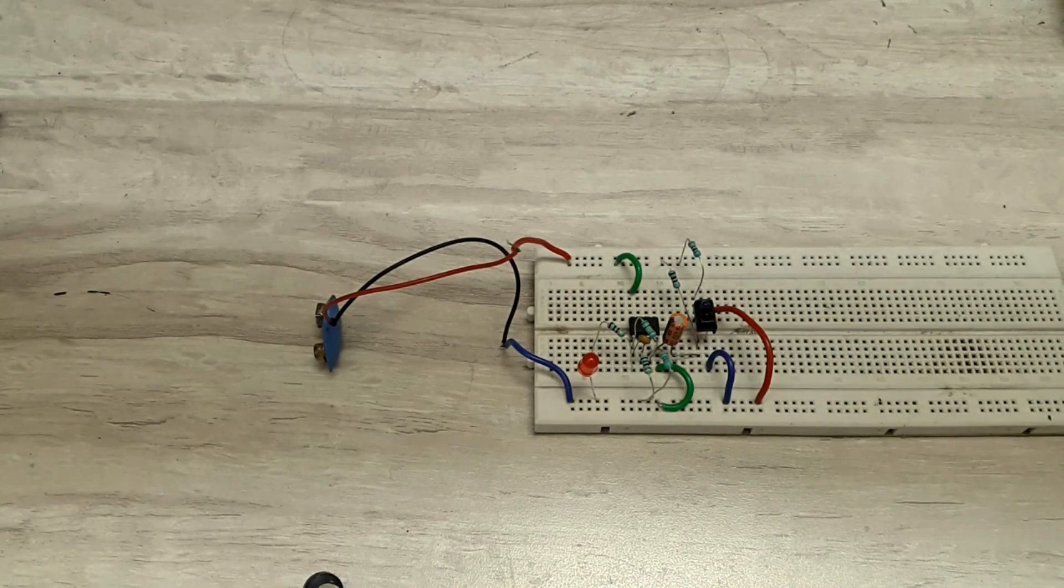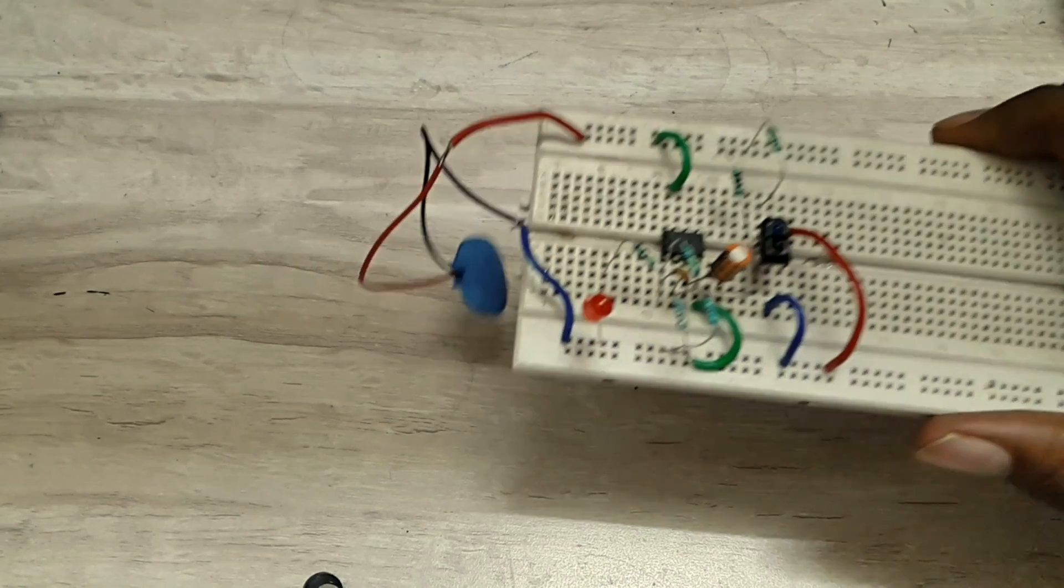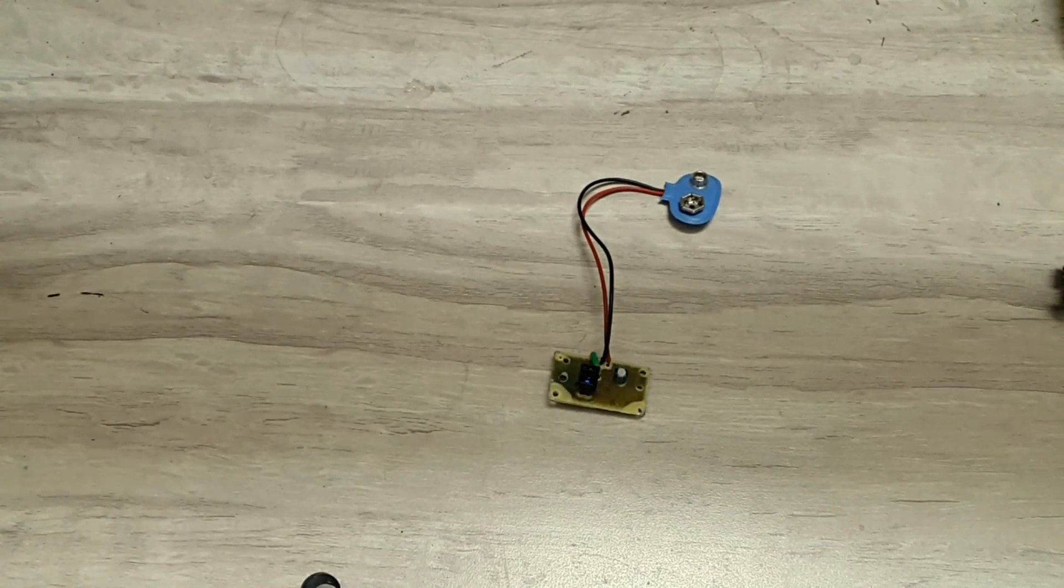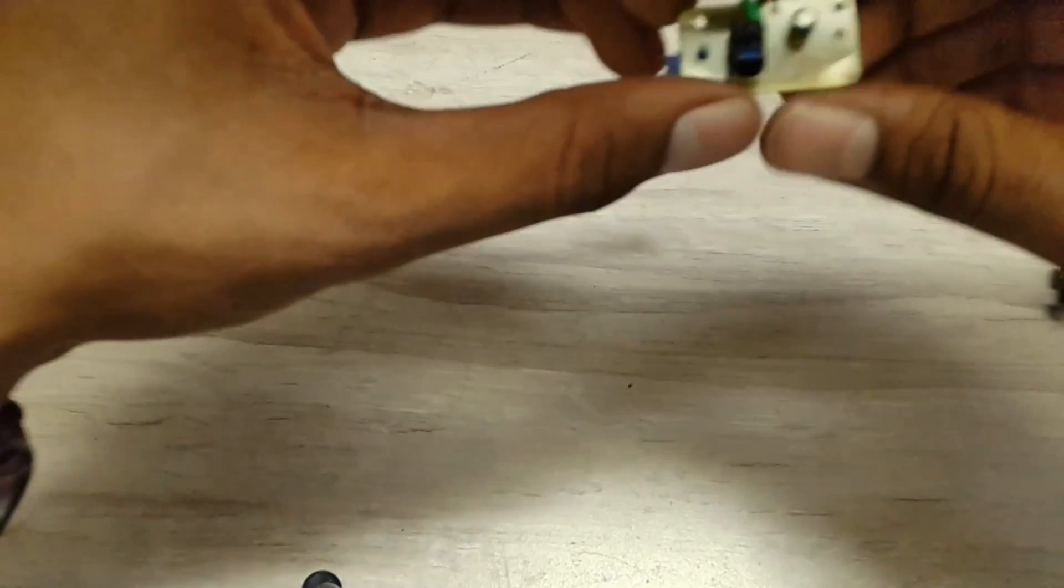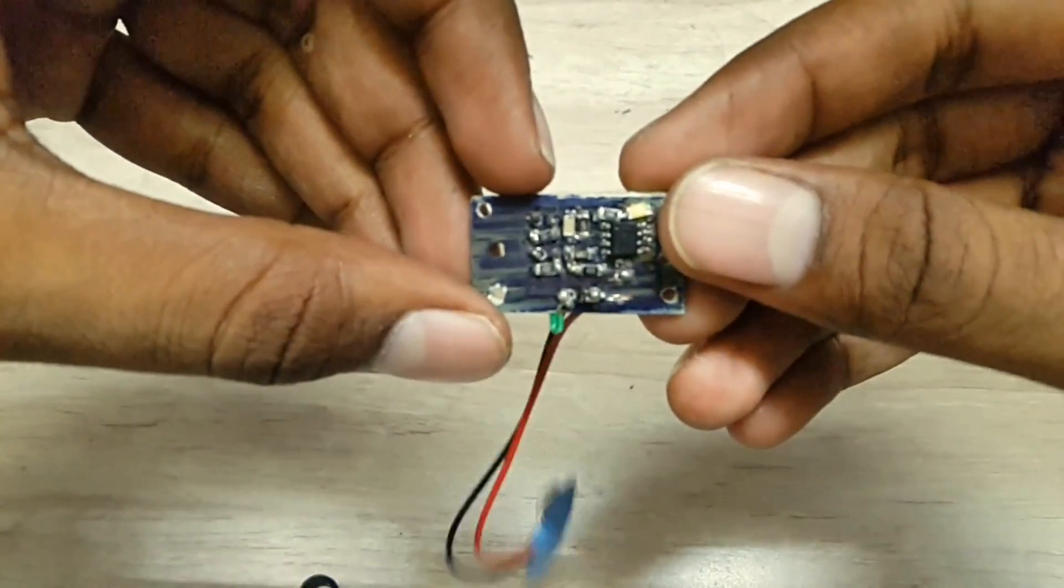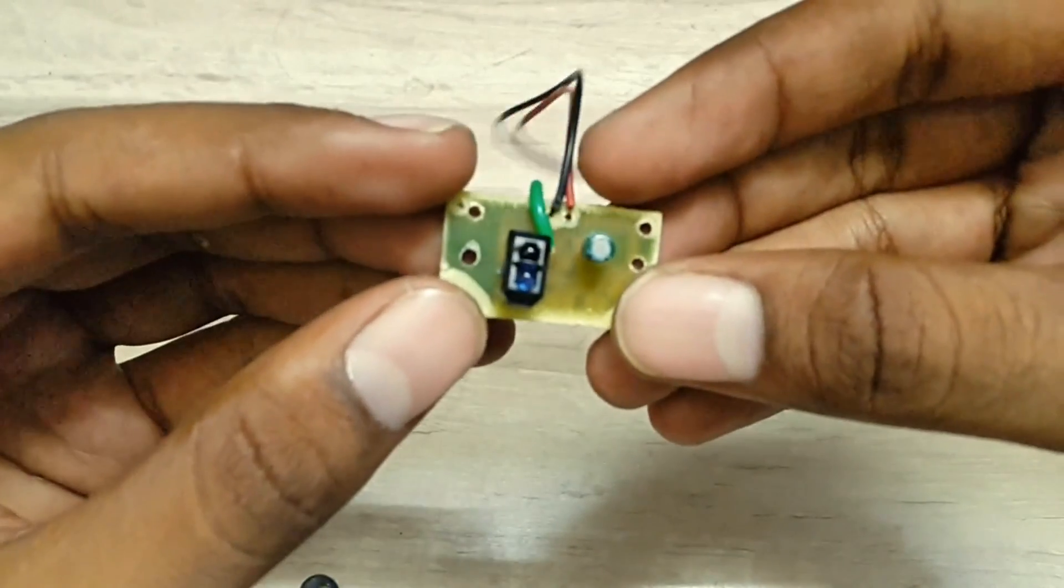This is how the connection looks on the breadboard. This can be transformed into a smaller size if we design a PCB for this circuit. I have used SMD components to make it even tinier.